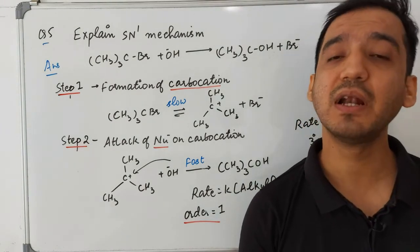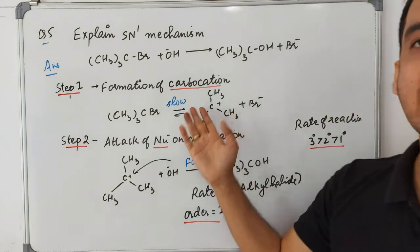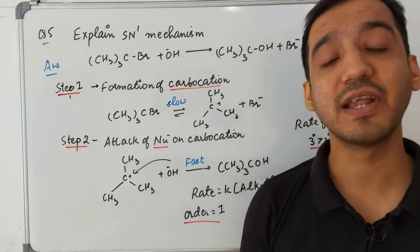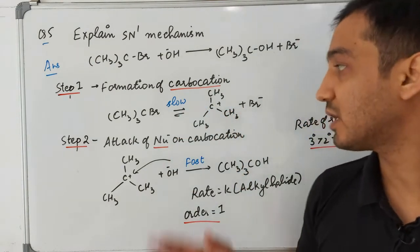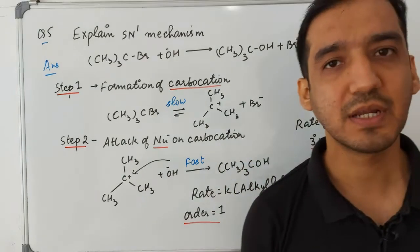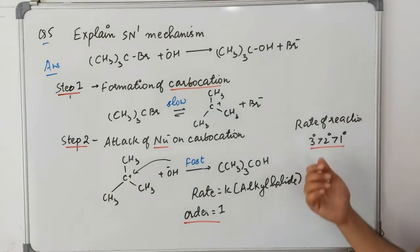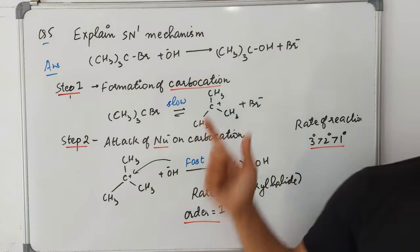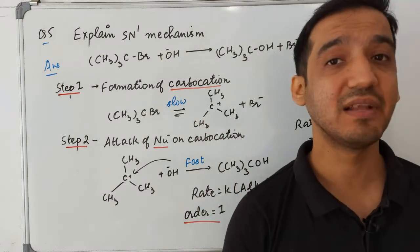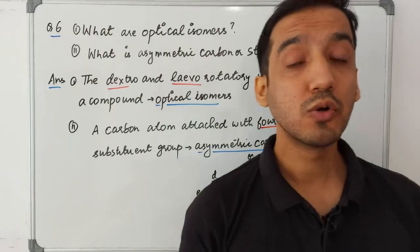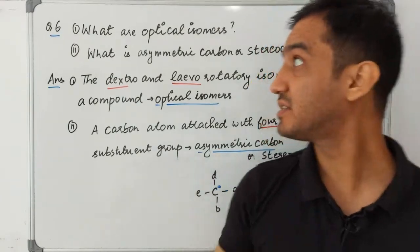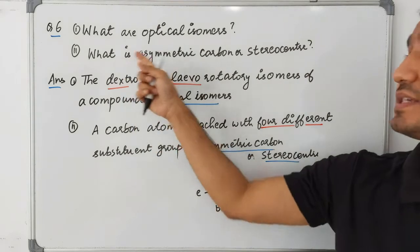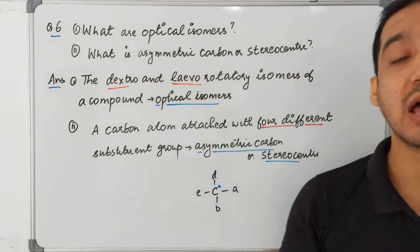The rate of the SN1 reaction depends on the stability of the carbocation — the more stable the carbocation, the faster the rate. Tertiary carbocation is the most stable, so the reactivity order is: tertiary > secondary > primary. This completes the SN1 mechanism.